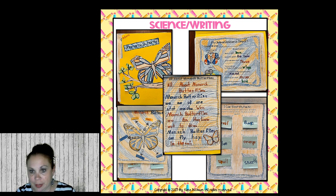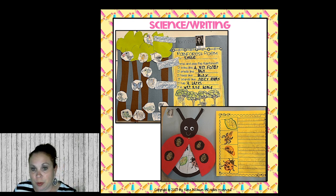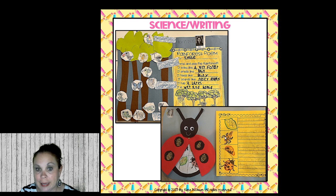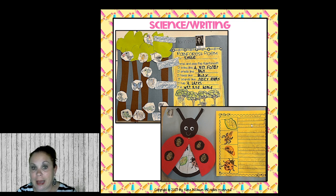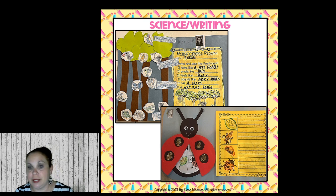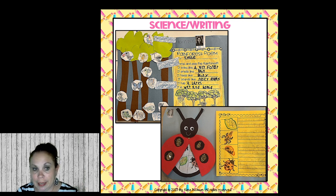Another thing we do in science is write about the ladybug life cycle using sequence words — first, then, next, and last. We cover the eggs, larva, pupa, and ladybug, and they write a full sentence for each part. I have vocabulary words on the pocket chart: pupa, larva, ladybug, eggs, aphids, and life cycle. They use as many words as they can in their story, then make a craftivity with a ladybug where the life cycle is revealed inside the wings.